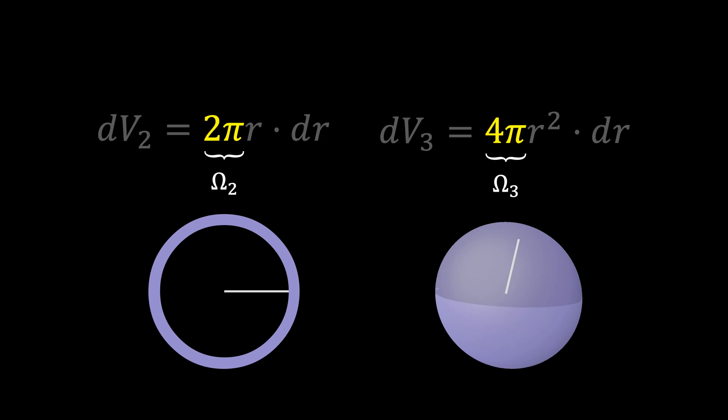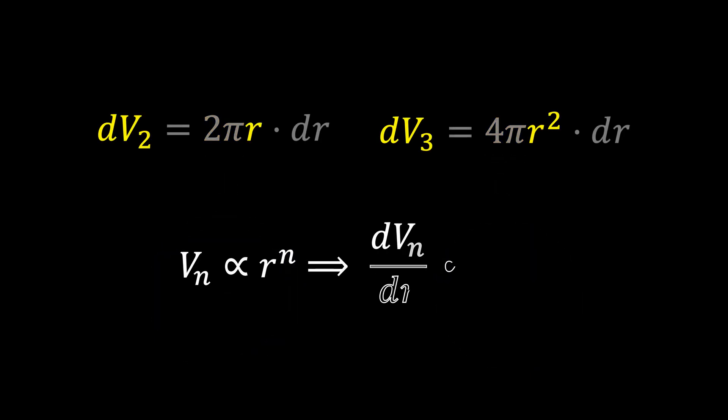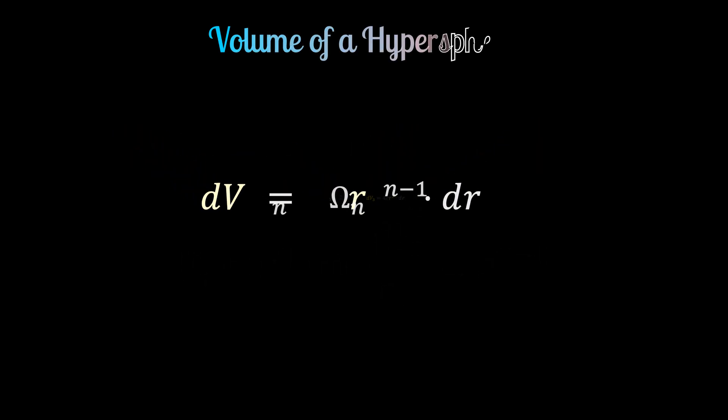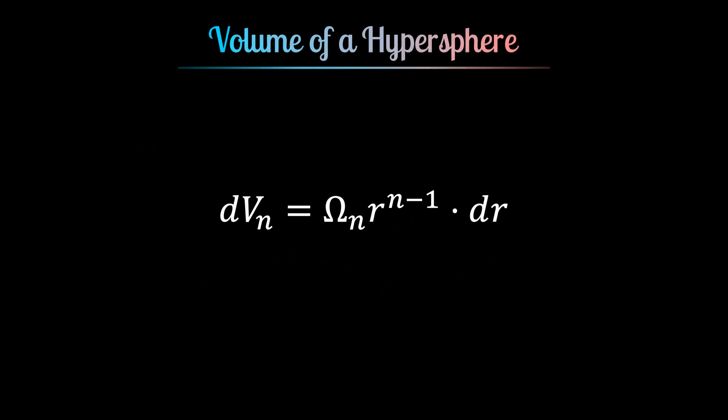To extend these formulas to n dimensions, notice that the power of r is always 1 less than the dimension number, which seems obvious as the volume of n-dimensional sphere is proportional to the nth power of its radius. In general, for an n-dimensional sphere, all of the work will be in the search for this ωₙ, which represents the angular shape of the boundary in an n-dimensional space.